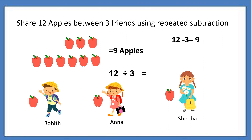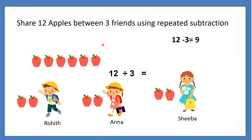Now what will we do? Again we will share. If you observe, again this first apple goes to Rohit, the next to Anna, and the third apple again to Sheba. So now, total — you count how many apples are there: 6 apples. That means out of 9 apples, again how many apples we have given to them? 3. So 9 minus 3 — it is 6 apples we are having.